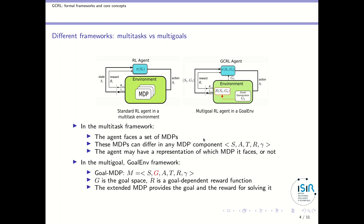The agent may have a representation of which MDP it faces — in which case it can learn a different policy for each MDP — or it may not have such representation, and then we want the agent to behave as well as possible given some average behavior over the different MDPs, which will of course not be very efficient. The other case is the multi-goal case. Let's consider first the case where the goal comes from the environment. We extend the MDP with some goal, so the MDP contains the state space, the goal space, the action space, etc. Importantly, the reward function will depend on the goal, and this extended MDP provides both the goal and the reward function the agent gets for solving it.